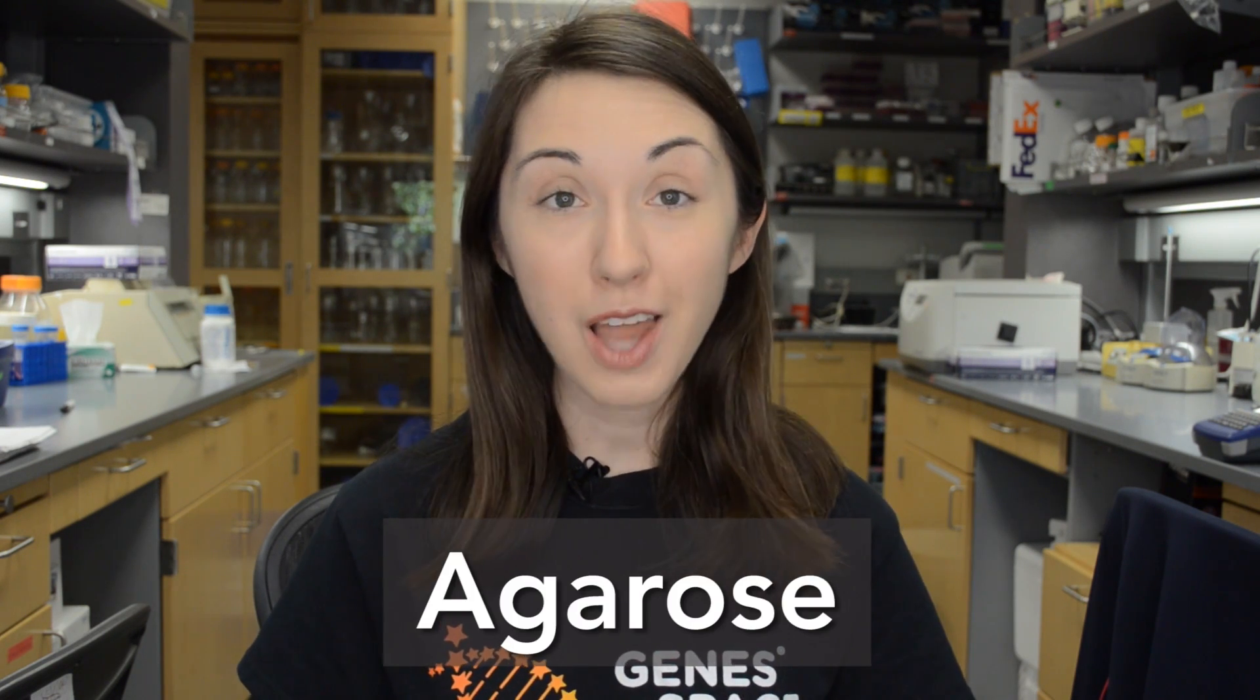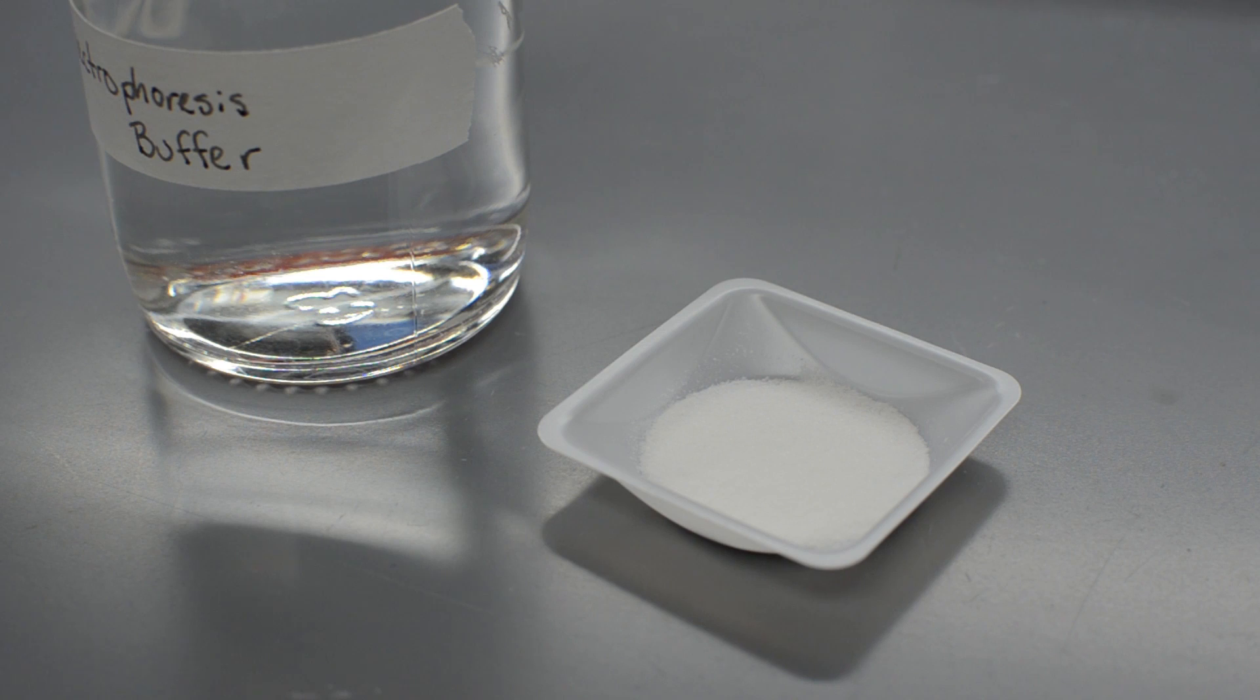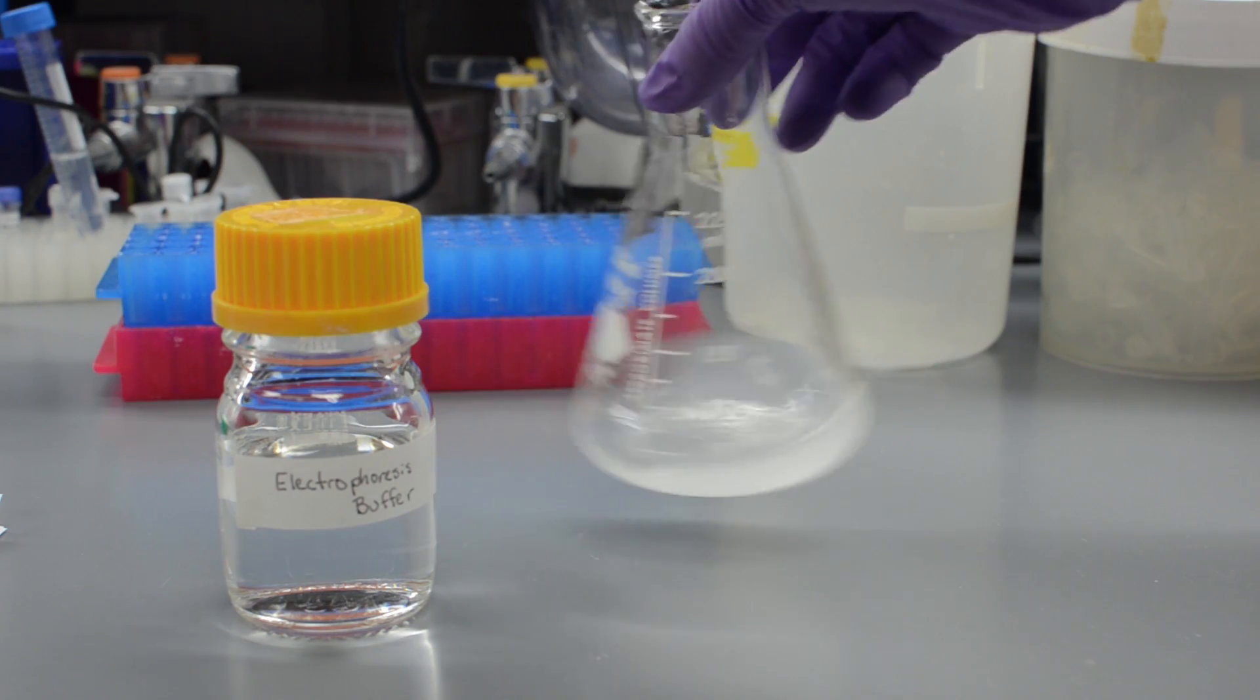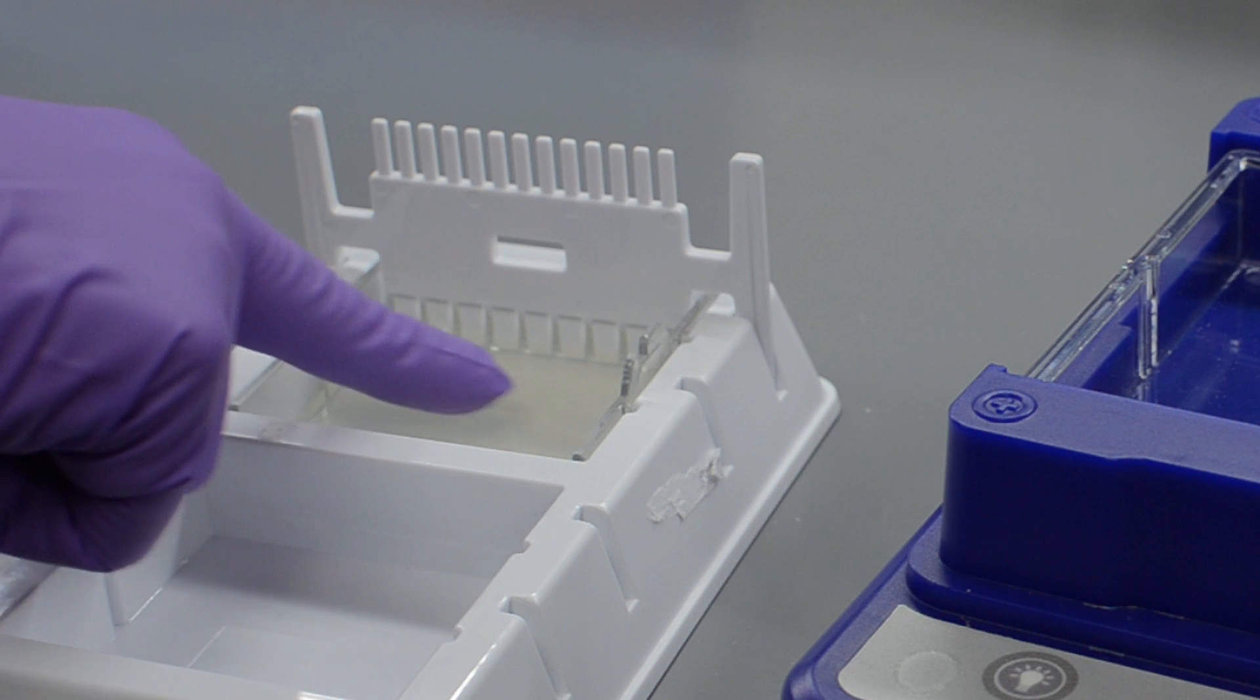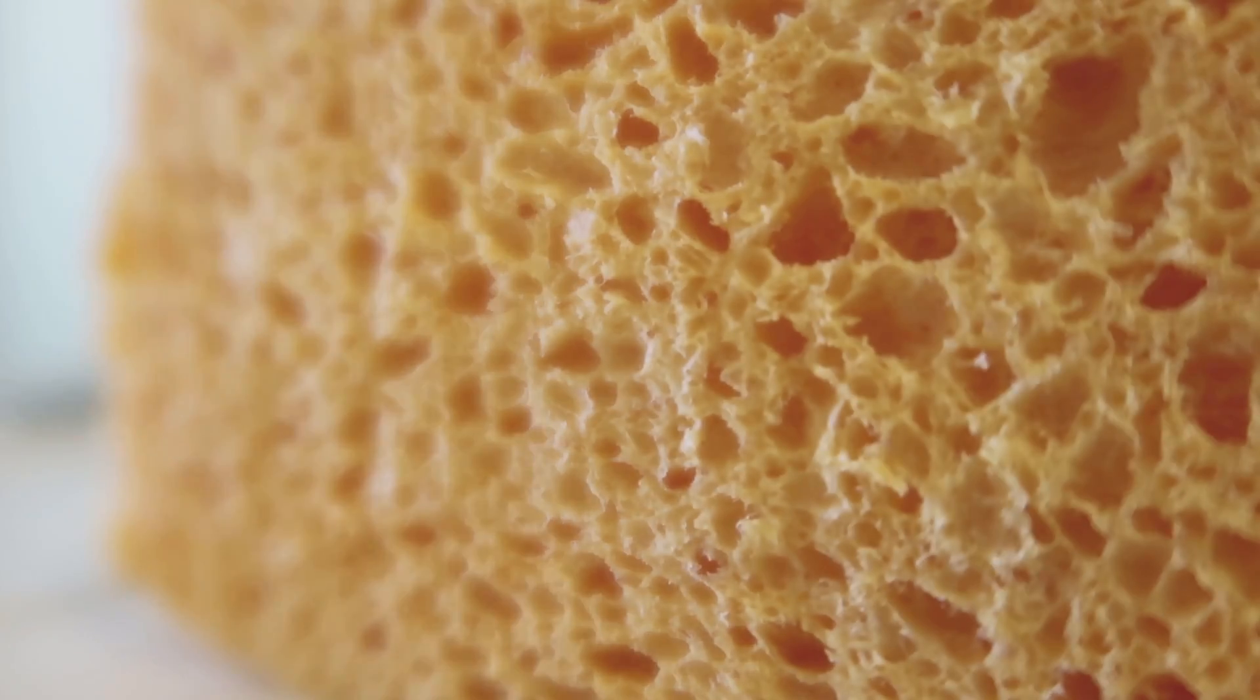DNA electrophoresis gels are often made from agarose, a long polysaccharide or sugar molecule extracted from seaweed. It comes in a dry powder, and when we mix it with a liquid, it forms a gel, much like the gelatin in Jello does. If you zoomed in on the gel with a high-powered microscope, you would see that it forms a web-like structure with lots of different holes, or pores, of many different sizes. In fact, it looks a lot like a kitchen sponge, with pores of all different sizes running through it.